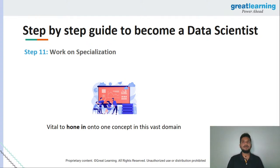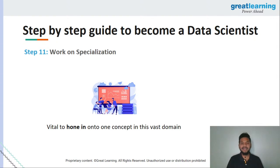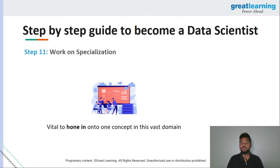Step number eleven is an important step: look at specializations. There are multiple ways to become a data scientist — you can learn on your own, but it's going to be very tough. You can pick up a master's program. But in today's world, the most popular way of learning is online education. Here at Great Learning, we have multiple specialization programs that take you from beginner all the way to becoming a complete expert in data science. Consider working on a specialization — there is no better investment. Knowledge is the best return on investment you can make.